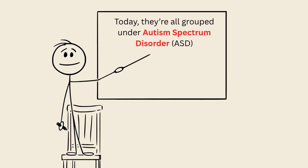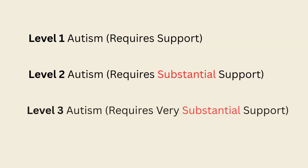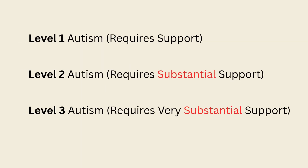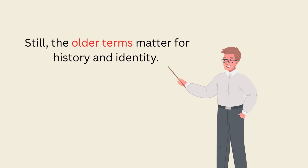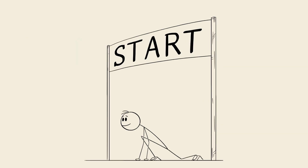Today, they're all grouped under Autism Spectrum Disorder, ASD, with levels showing how much support someone may need. Still, the older terms matter for history and identity. Let's explore each type, showing the many ways autism can appear.